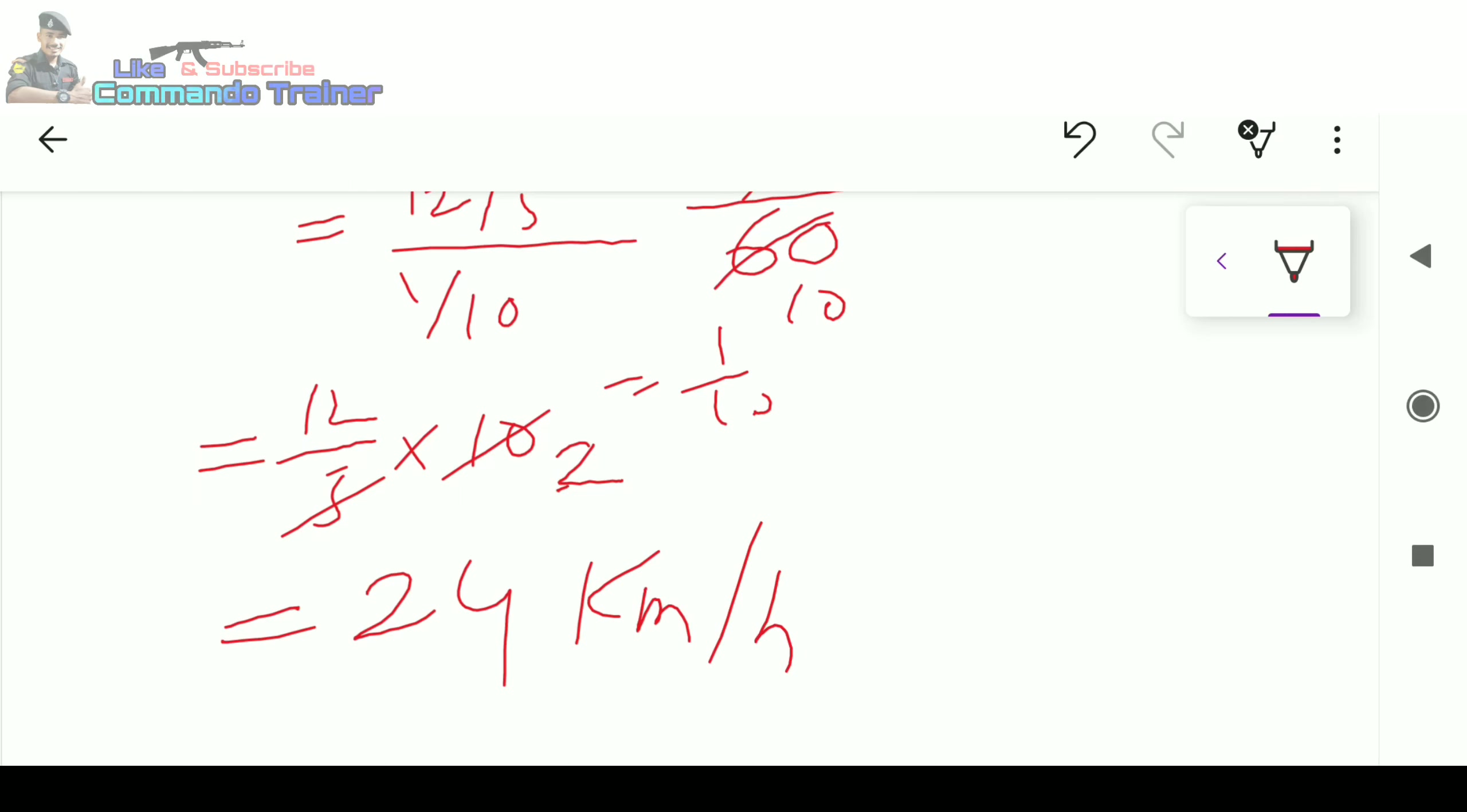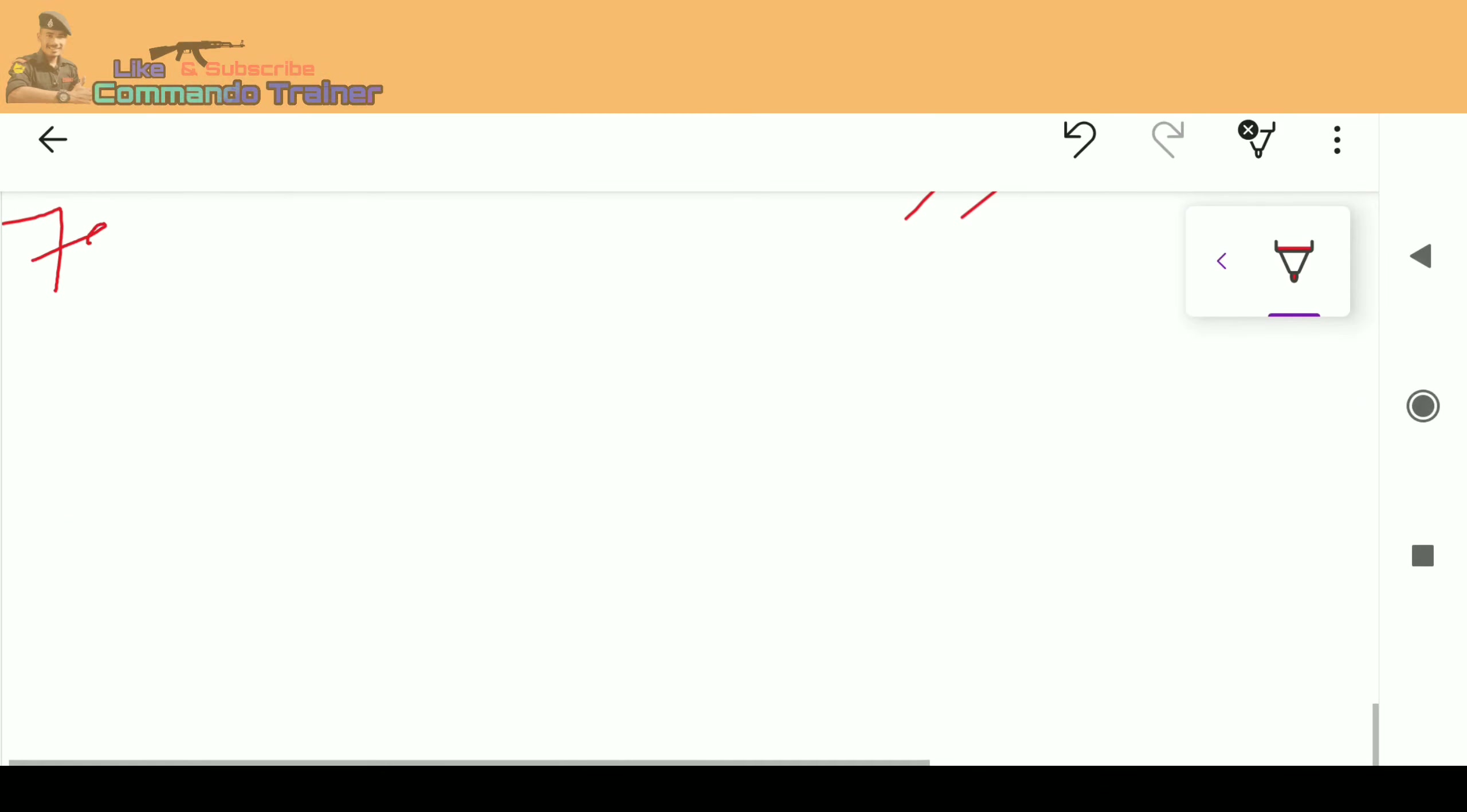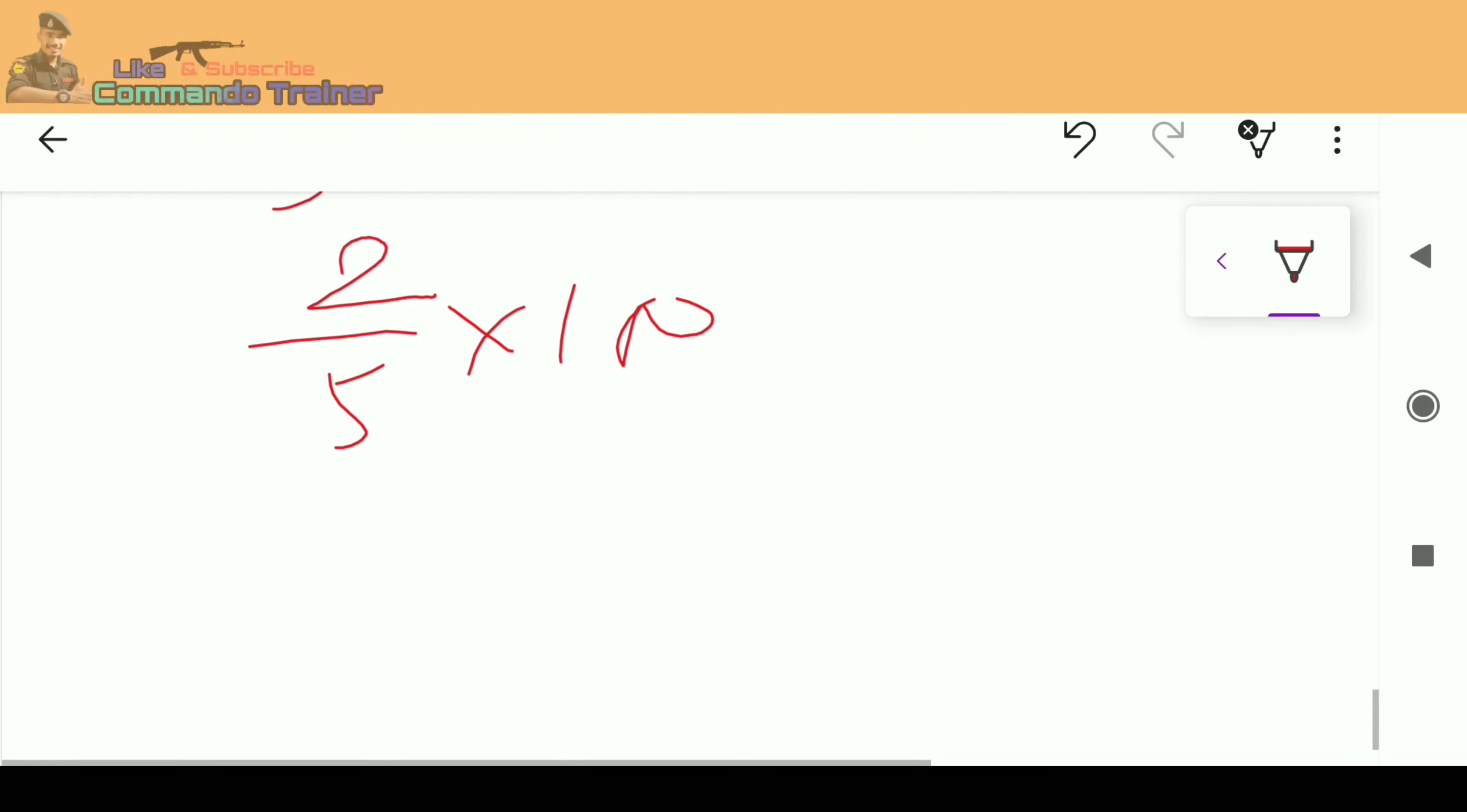Question number 79: convert 2 by 5 into percent. Multiply 2 by 5 by 100, which gives 40 percentage.